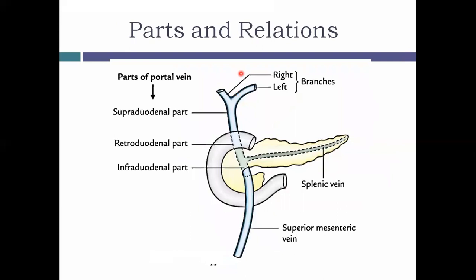Using the first part of the duodenum as reference, the portal vein is divided into three parts: the infraduodenal part (inferior to the first part of duodenum, where formation occurs), the retroduodenal part (posterior to the duodenum), and the supraduodenal part (superior to the duodenum). The posterior relation at all three parts is the inferior vena cava.